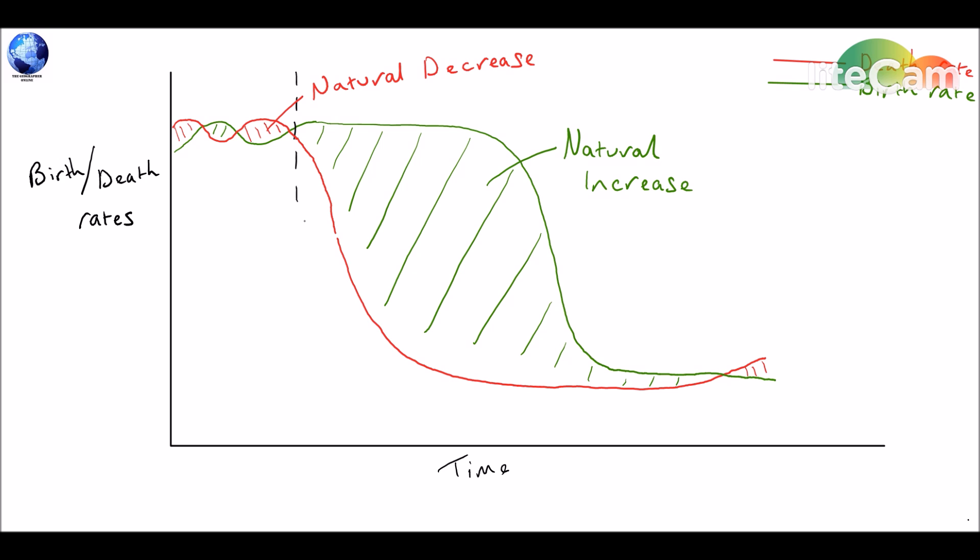Now the most important part of the demographic transition model, and the part where all of the explanation takes place, is what happens in each different stage. So as you can see, we're dividing up the demographic transition model into stages.